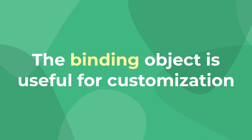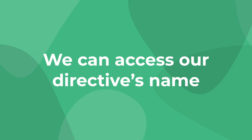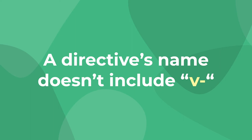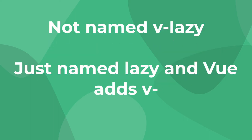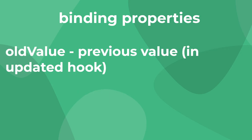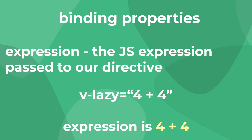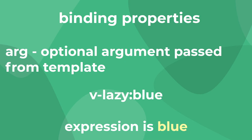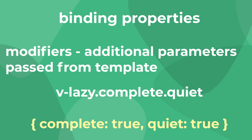The binding object contains several properties that help you add functionality to your hooks. It has a name, which is the name of your directive without the v- prefix — when you create your directive it's just called 'lazy' and Vue automatically adds the v- prefix. Binding also contains the value, which is the value passed to your directive using a JavaScript expression; old value, which is the previous value of the directive available in the update hook; expression, the entire expression bound as a string; arg, which is an argument passed with a colon; and modifiers, which are all the modifiers inside a single object, and you can add multiple modifiers.